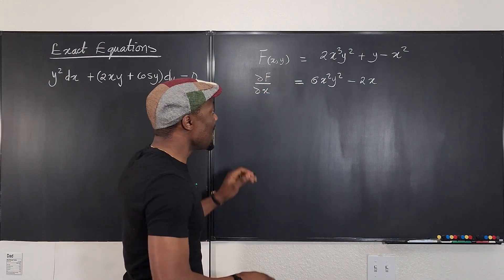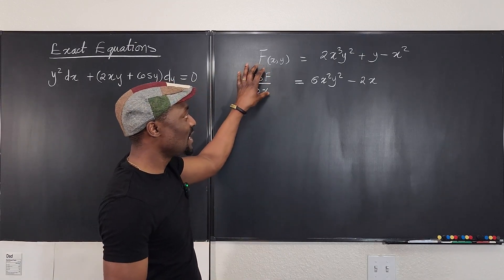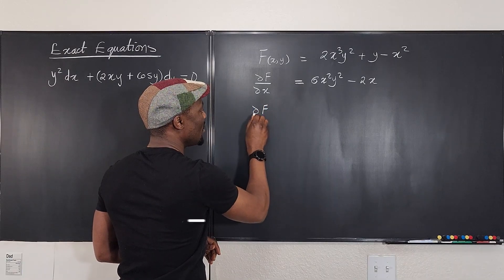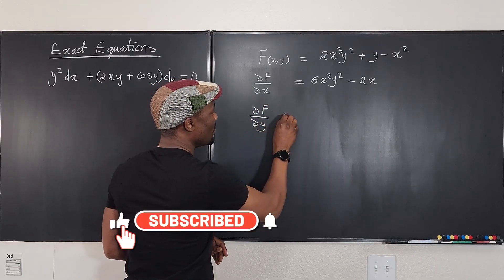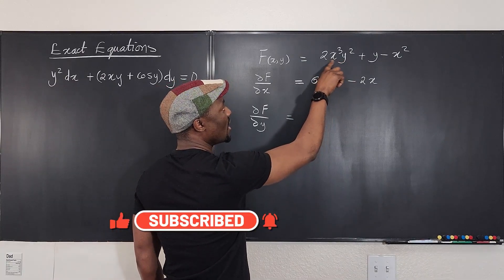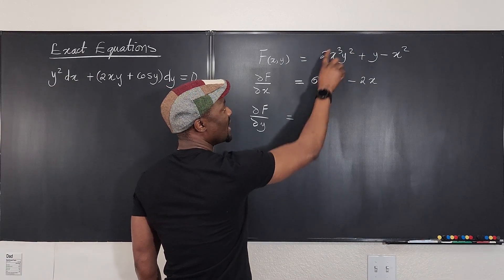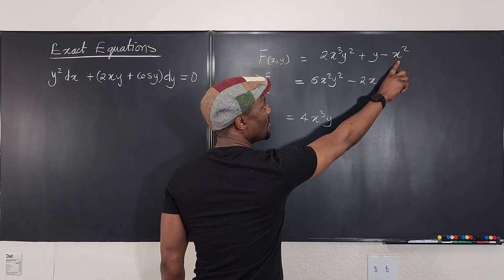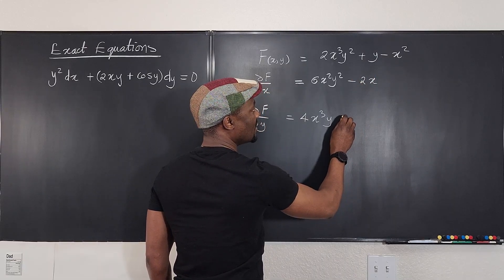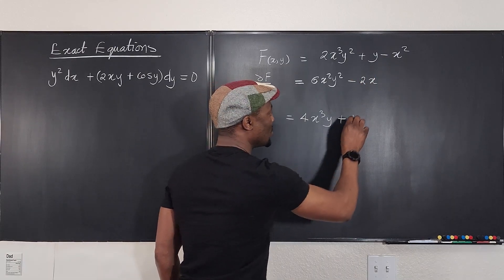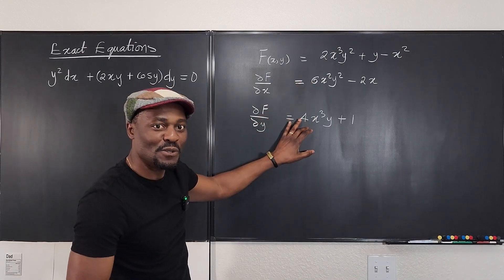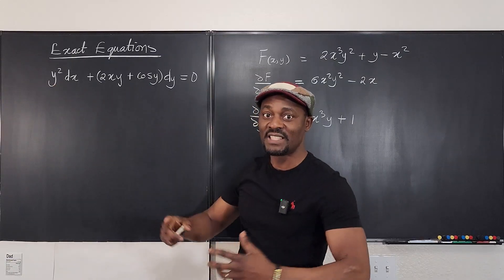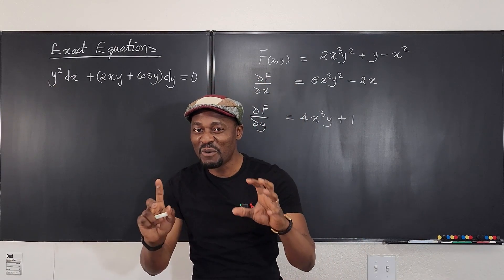I have taken the partial derivative with respect to x. Now let me do it with respect to y. Treating x cubed as constant and differentiating y squared gives 4x cubed y. The constant term becomes 0 because it doesn't contain y, and the derivative of y is just 1. So now I have these two partials, which represent the two functions for an exact equation because they came from the same source.